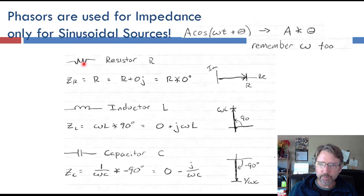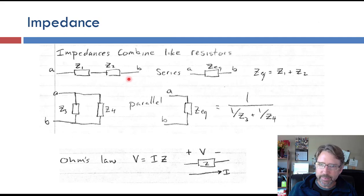So again, these are the components: resistors, inductors, and capacitors, and the impedances, and sketched out here on the complex plane. Impedances, we often just draw as a box, because it could be a capacitor, or an inductor, or a resistor, or some combination that has a total impedance.